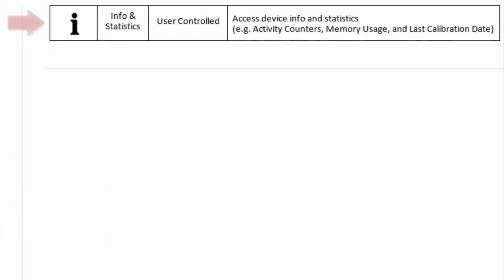The Info and Statistics icon provides additional information on recent usage of the device, battery strength and maintenance, last calibration date, the unit's latest firmware version, and contact information for ITD Food Safety's Technical Support Department.